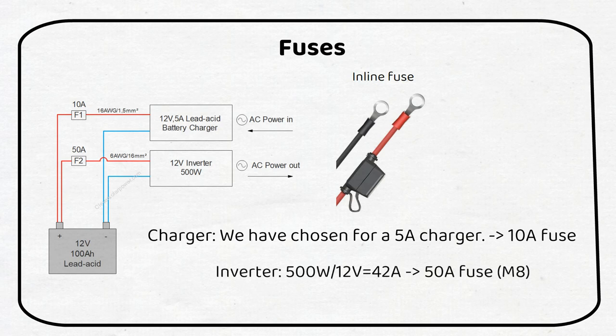The power of the inverter is 500 watts. If we divide 500 watts by 12 volts we get 42 amps. The closest fuse to 42 amps is 50 amps. We will use an ANL fuse because it will match the M8 screws on the battery terminals.